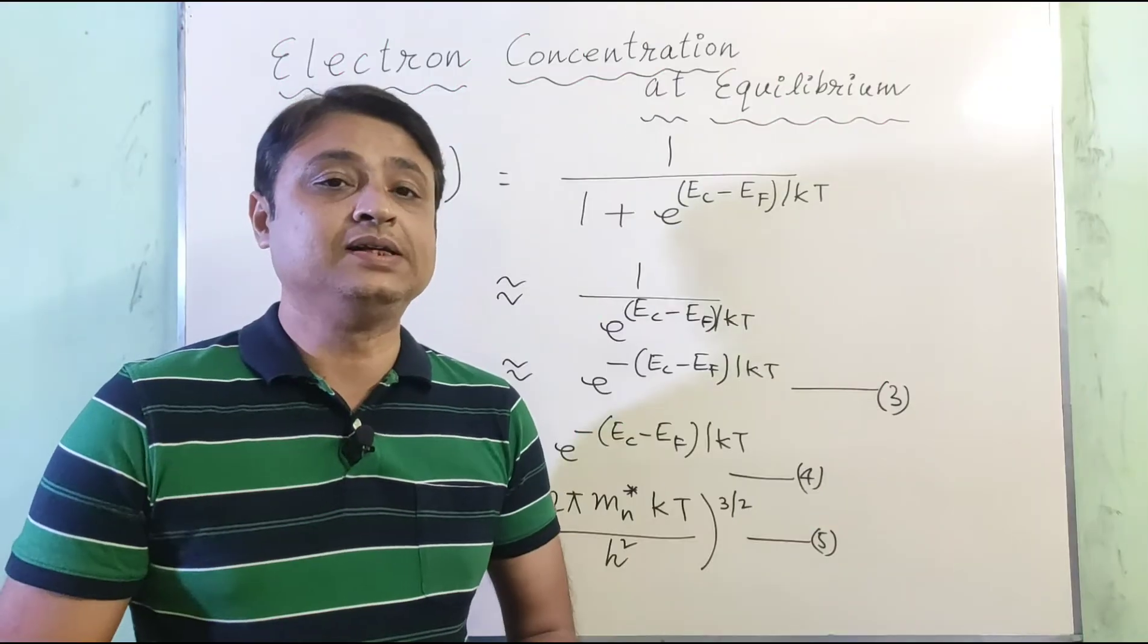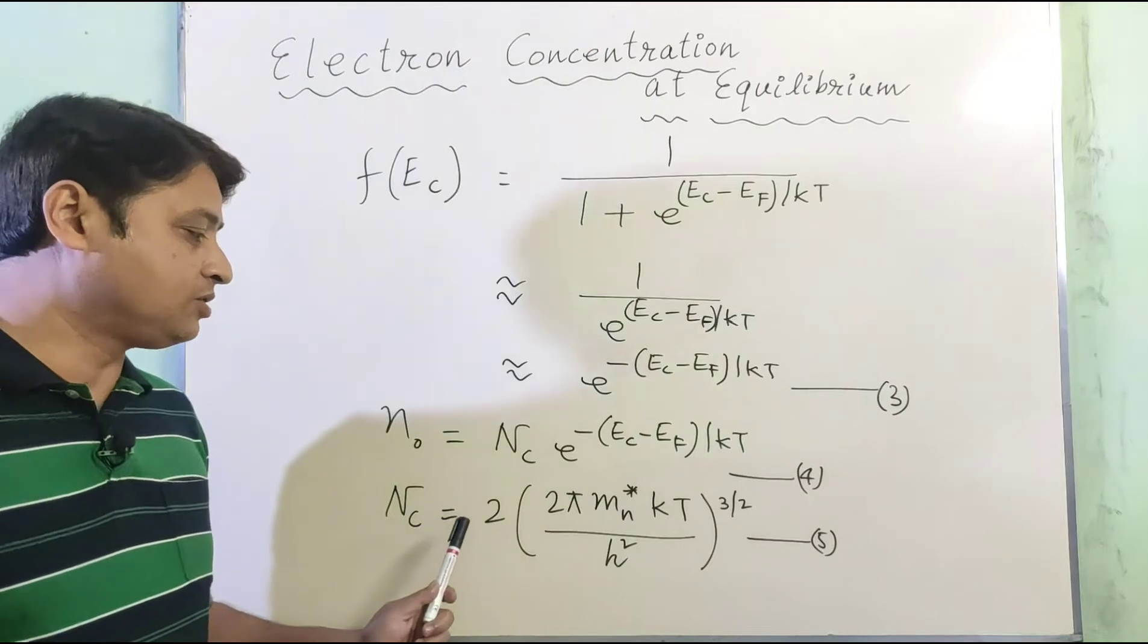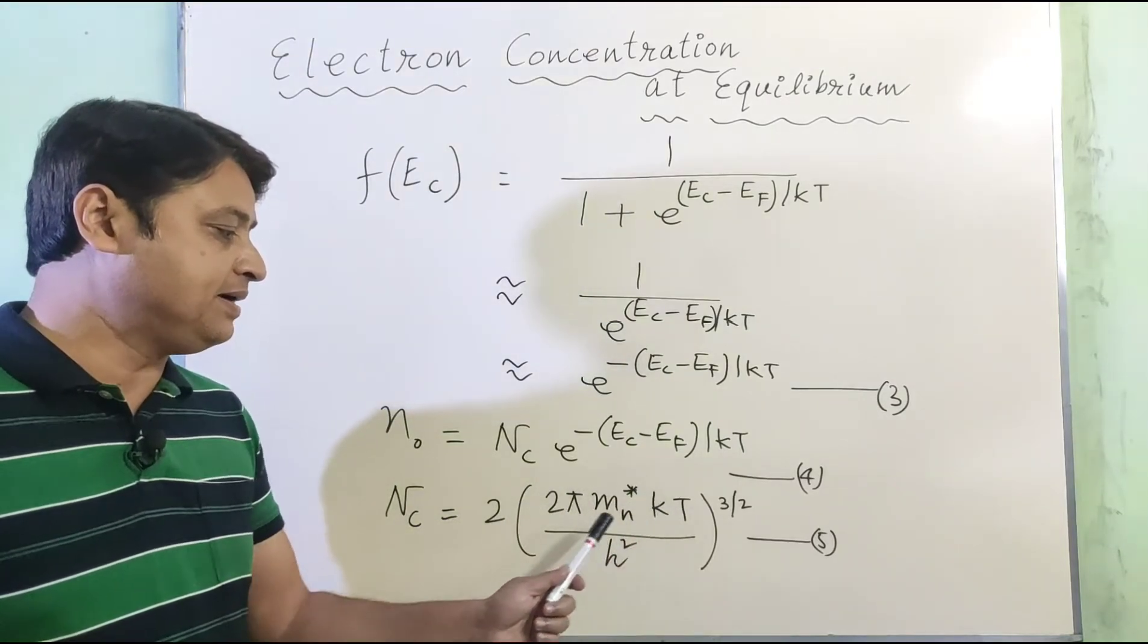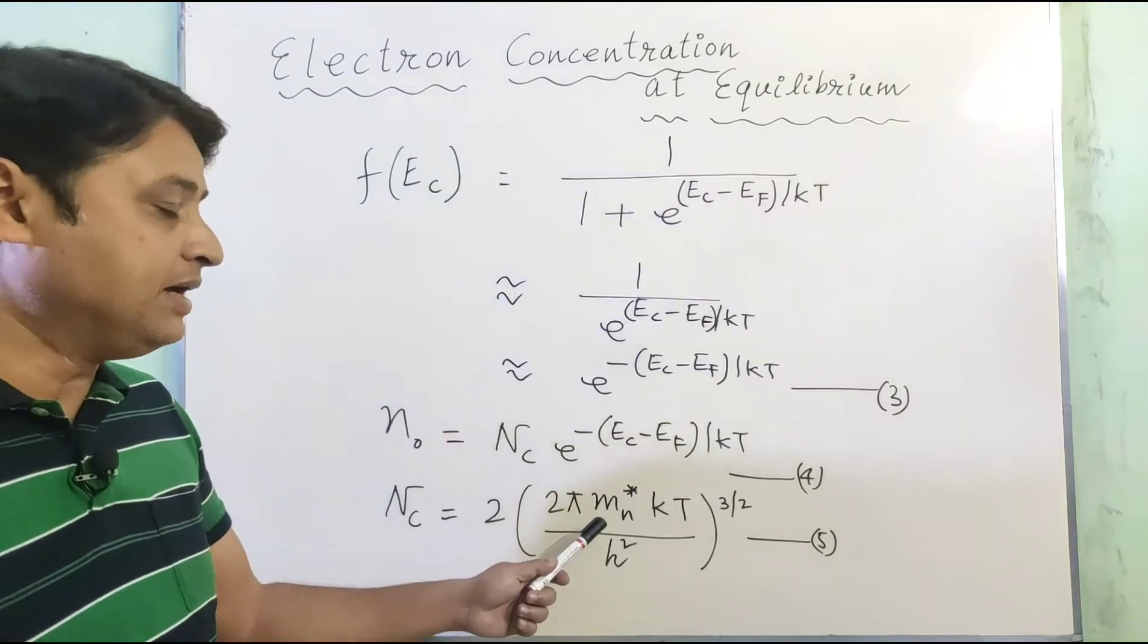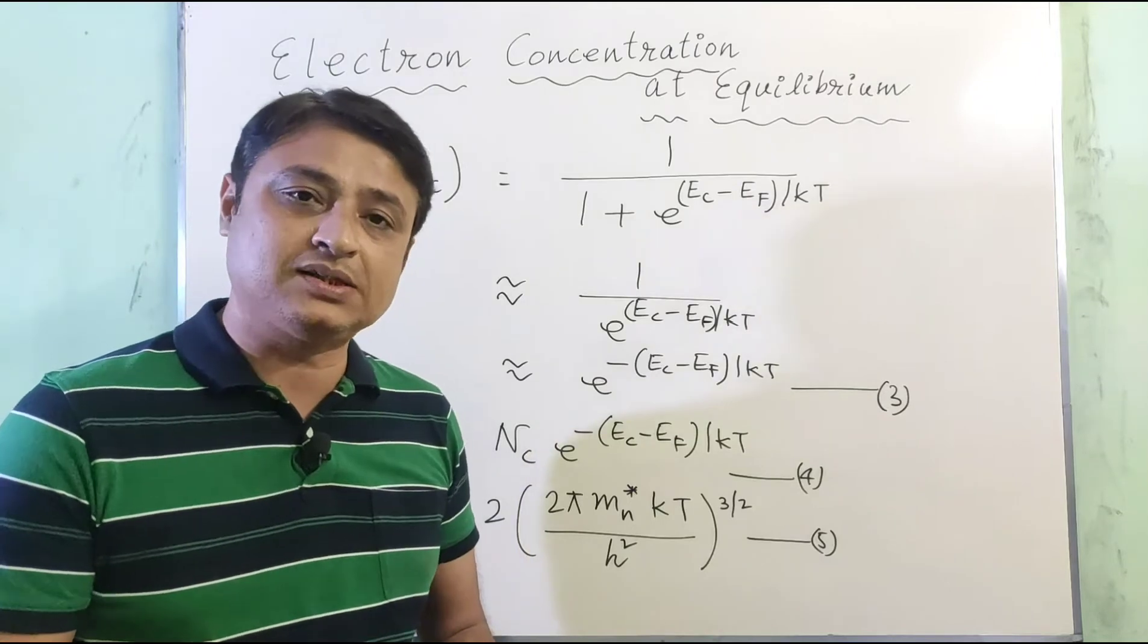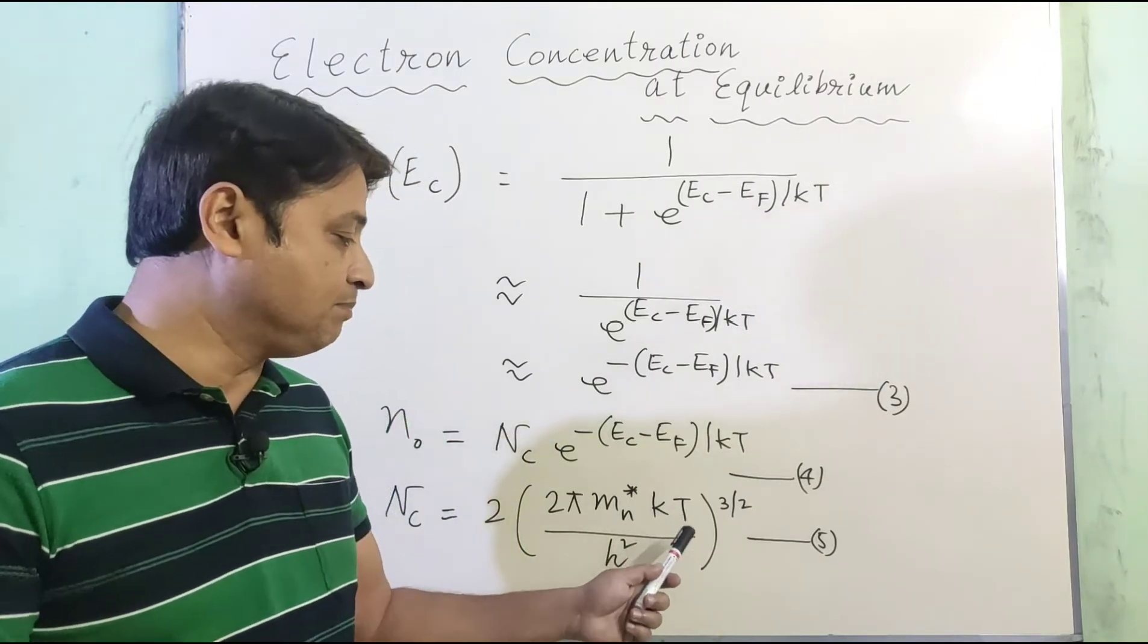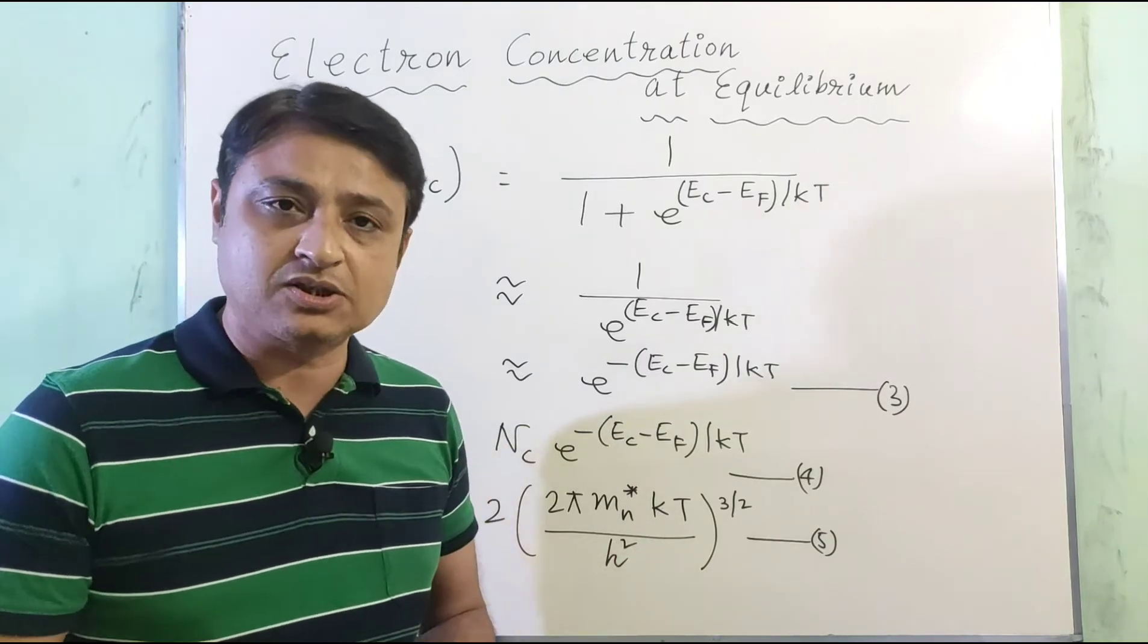The effective density of states Nc = 2(2πm*n kT/h²)^(3/2), where m*n is the effective mass of an electron, k is the Boltzmann constant, T is the absolute temperature, and h is Planck's constant.